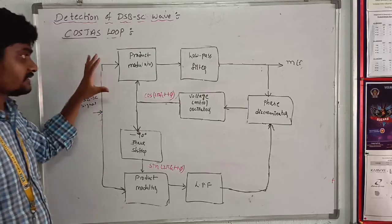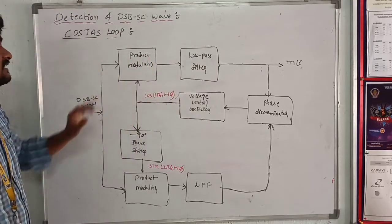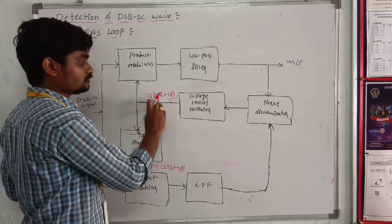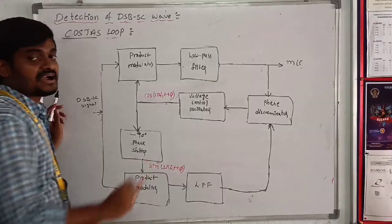The detector upper path is referred to as in-phase coherent detector. Because we can use cos(2π fc t + φ), the upper path is referred to as I channel.